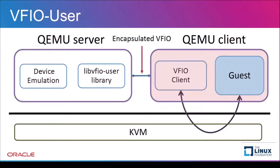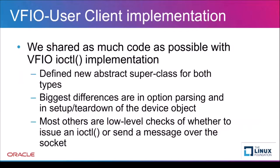We're now about to describe the actual VFIO client implementation — it's the shaded area to the right side of this slide. We want to reuse as much VFIO code as possible, so we defined an abstract superclass for both kernel and user implementations to use. This class contains most of the current VFIO code. The only subclass-specific code is in the option parsing and setup and teardown of the device object. Most of the changes to the server class are whether to issue the IOCTL to the kernel in the kernel implementation, or send a message over the socket in the VFIO user implementation.